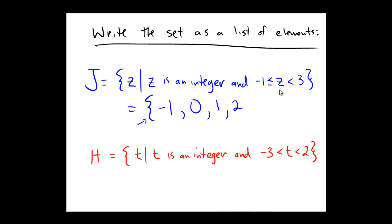2 is less than 3, but 3 is not less than 3. So the final answer here would be the set containing negative 1, 0, 1, 2.